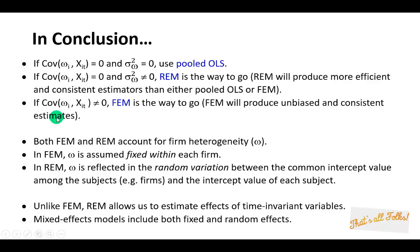Now we want to note though that both fixed effects model and random effects model account for firm heterogeneity, assumed fixed within each firm as we learned. In a random effects model though, the cross-section random error term omega is reflected in the random variation between the common intercepts shared by all firms in the same business environment and the intercept value of each of the firms.